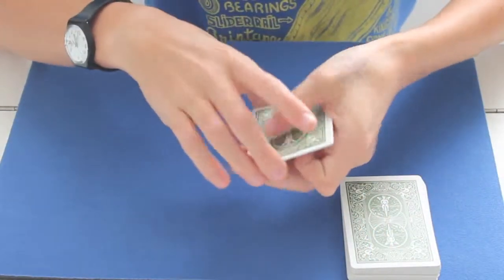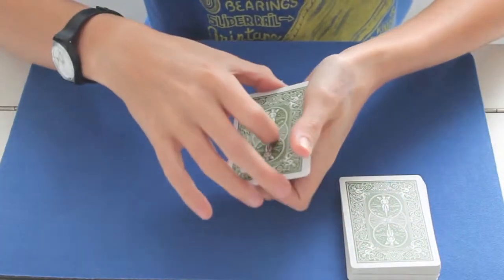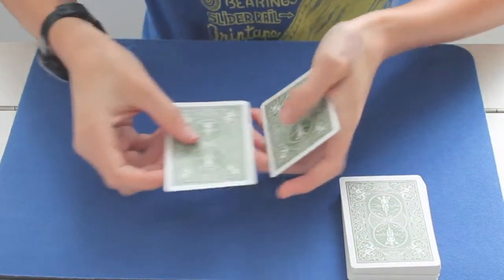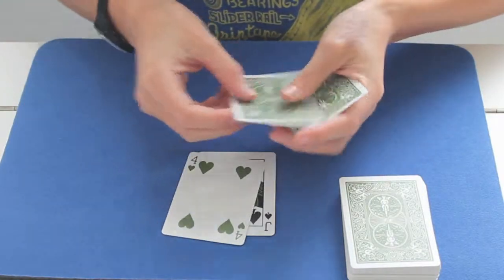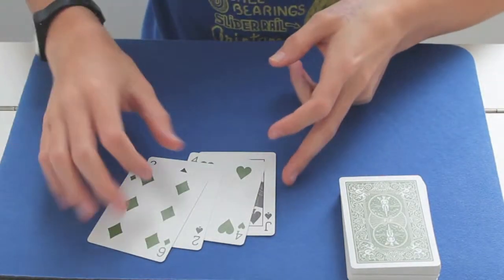So I have one, two, three, four, five cards. But look. If I snap my fingers, I only have one, two, three, and four cards.